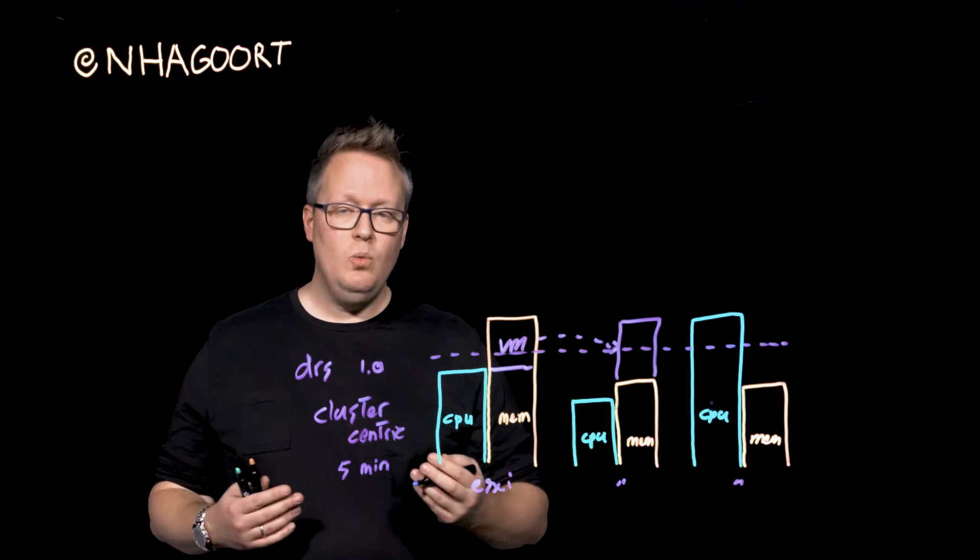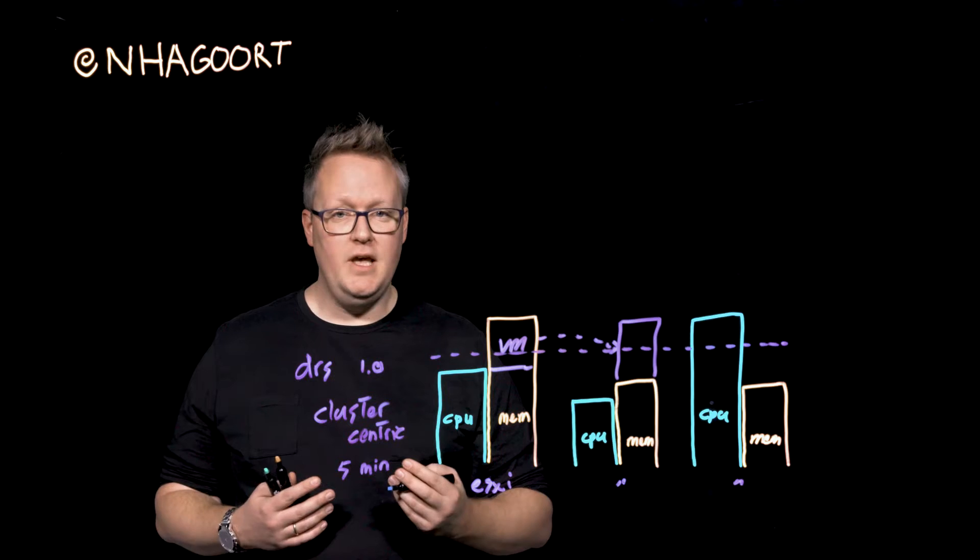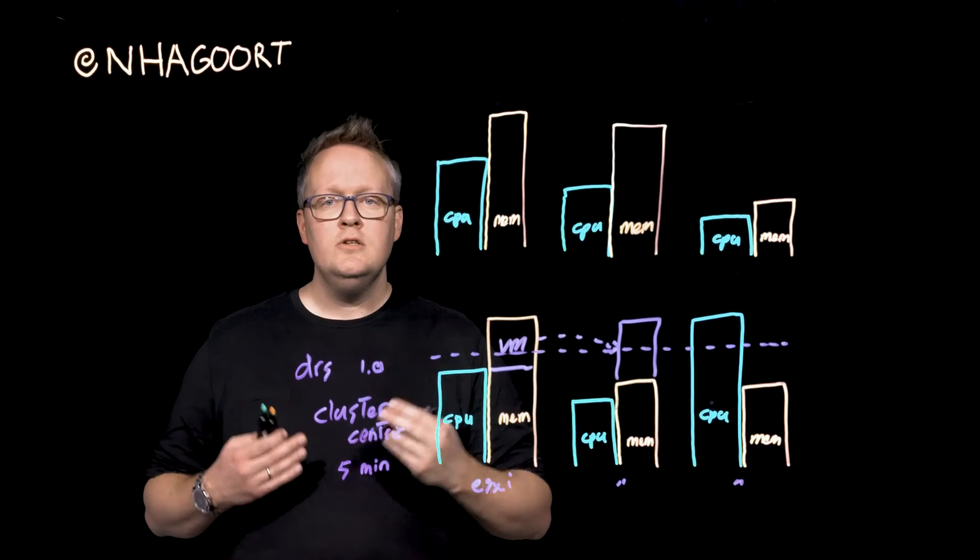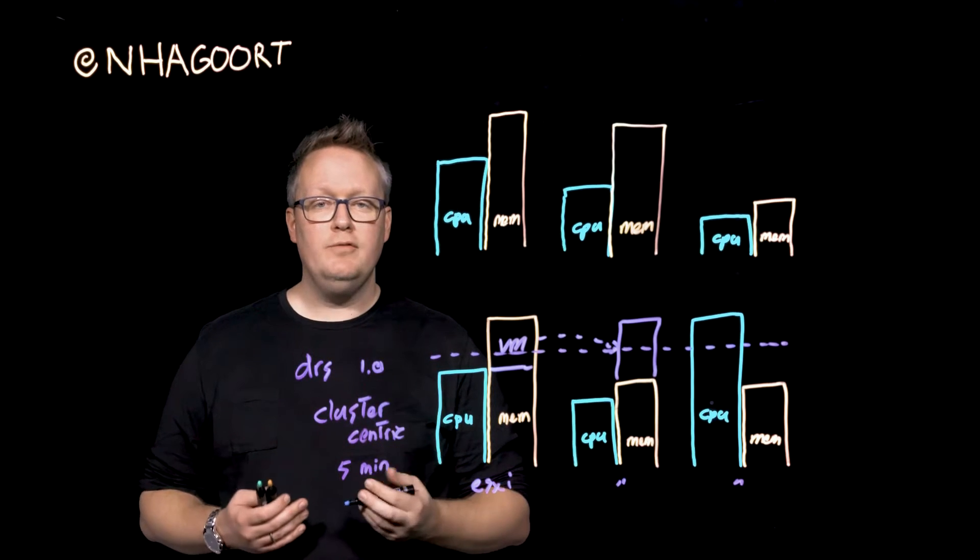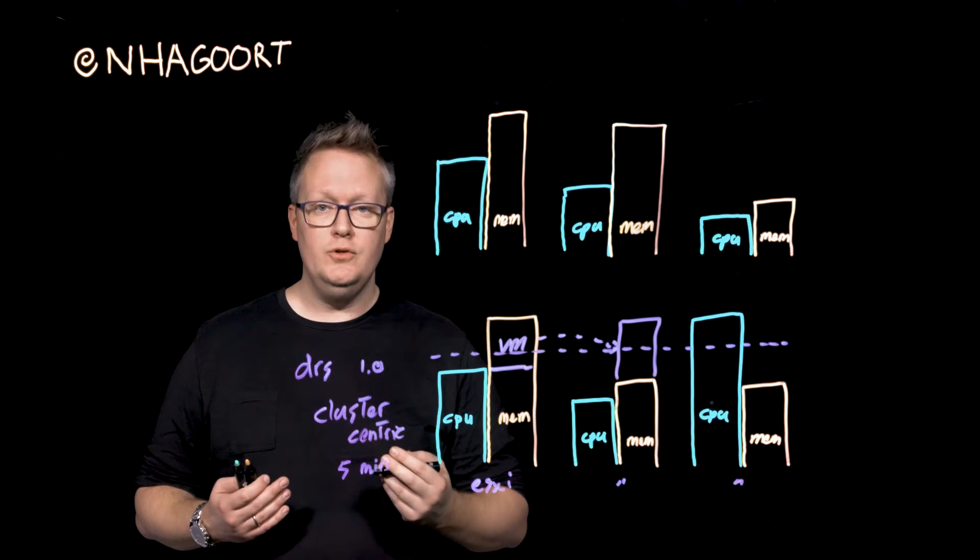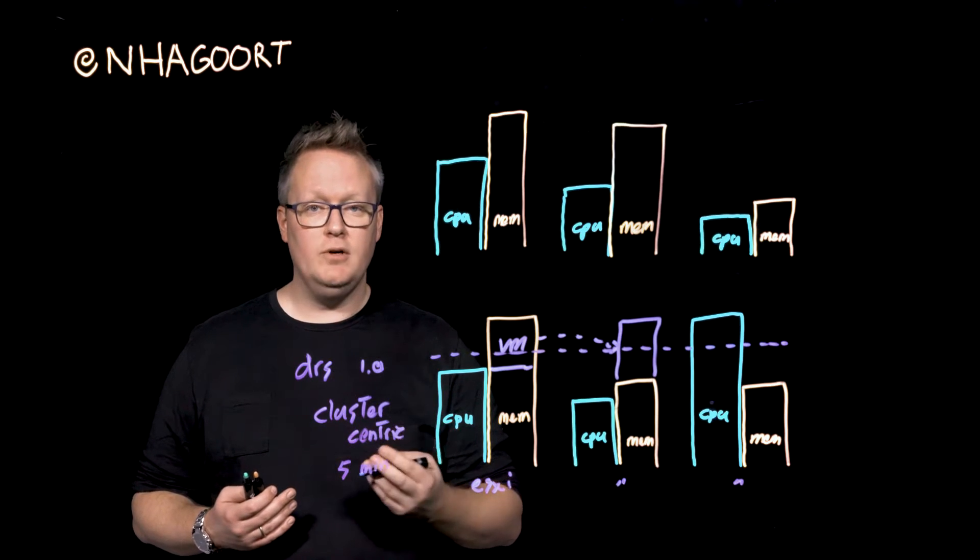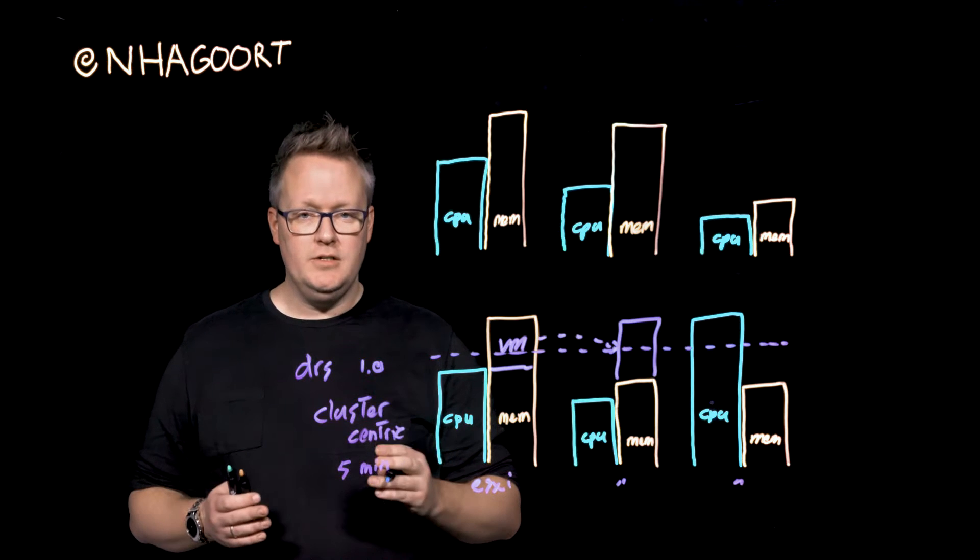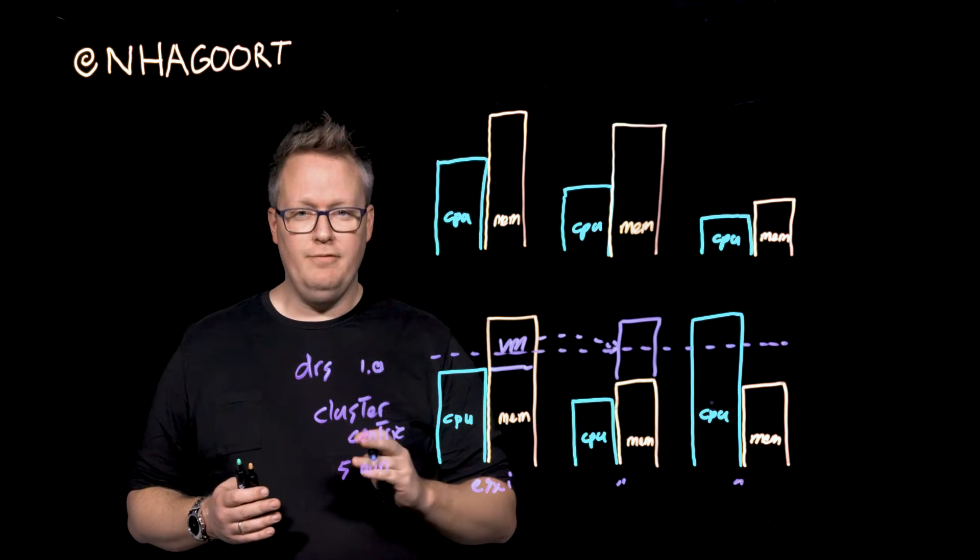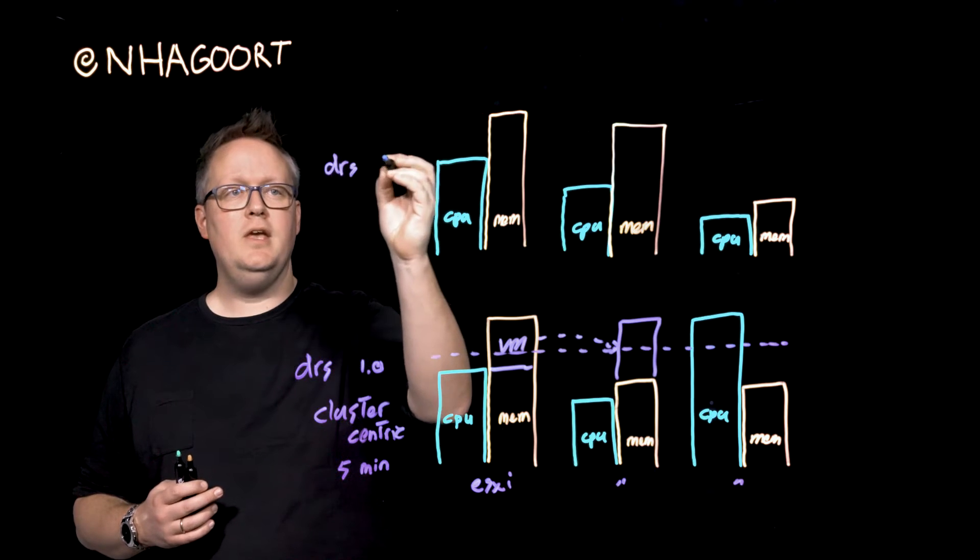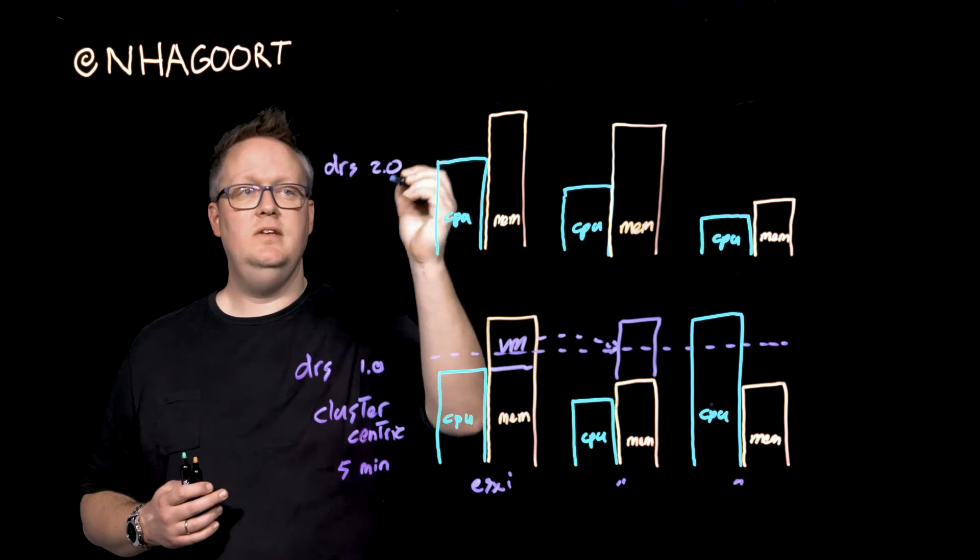Now let's look what we changed with vSphere 7 and already in VMC since the M9 release. So now if we look at what we have done with DRS in vSphere 7 or whenever you use VMC, VMware Cloud on AWS, we stepped away from the cluster-centric focus.